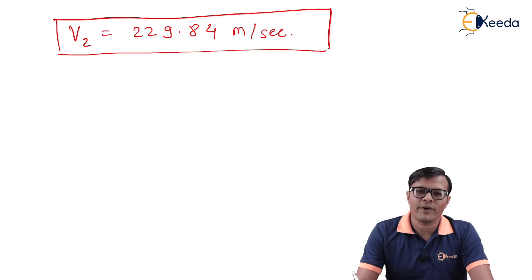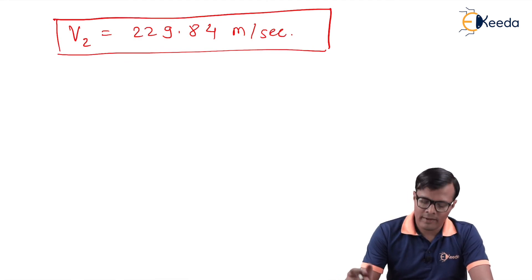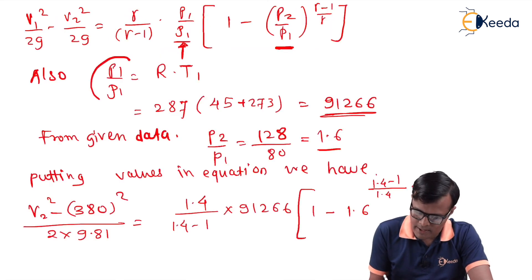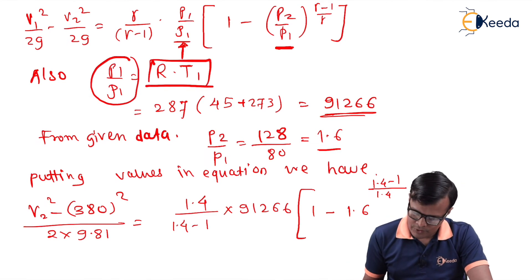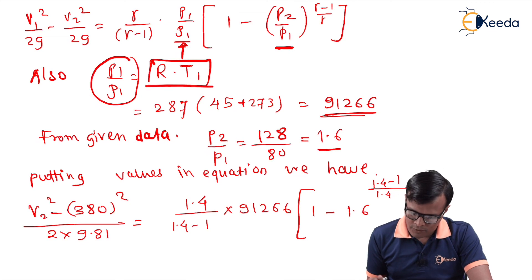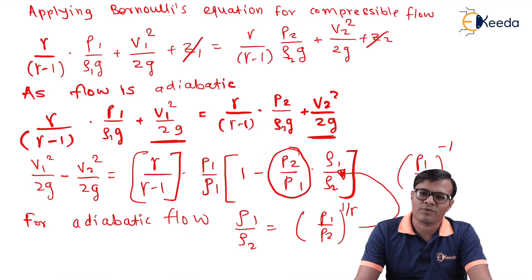In this equation we were not able to calculate densities at different sections directly, so we omitted the density terms by replacing them using R and T values that we already know. This was the trick to solve this problem — when all values are not directly given, we use the properties of the specific type of flow. That's all, thank you.